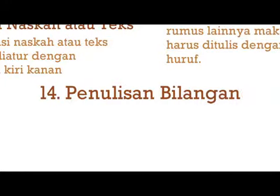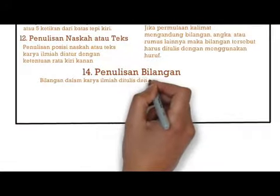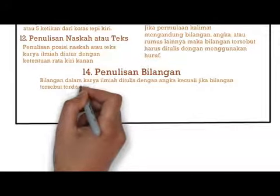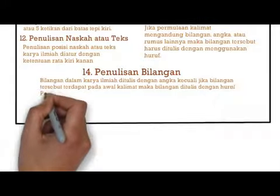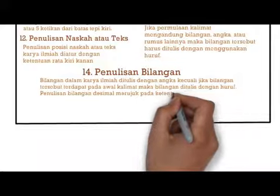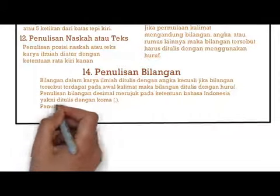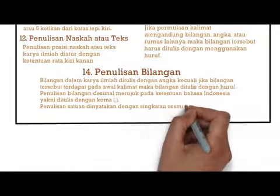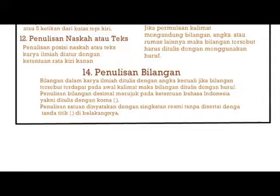Yang keempat belas yaitu penulisan bilangan. Bilangan dalam kalimat pada umumnya ditulis dengan angka, kecuali jika bilangan tersebut berada pada awal kalimat. Penulisan bilangan merujuk pada ketentuan bahasa Indonesia yakni ditulis dengan koma. Penulisan satuan dinyatakan dengan singkatan resmi tanpa disertai tanda titik di belakangnya.